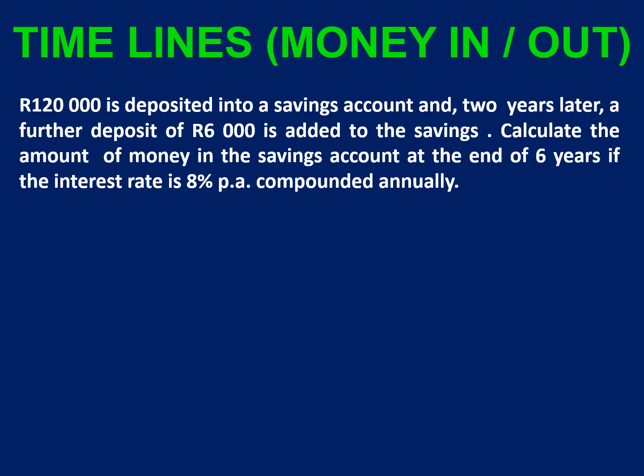For this question, 120,000 Rand is deposited into a savings account, and then two years later a further deposit of 6,000 Rand is added to the savings. Calculate the amount of money in the savings account at the end of six years if the interest rate is 8% per annum compounded annually. When you're putting money into the bank account, the bank is going to pay you interest, and we want to see how much interest we're actually getting.